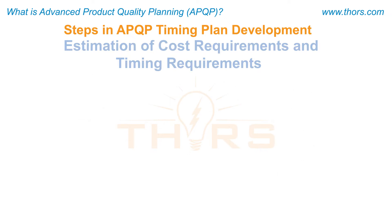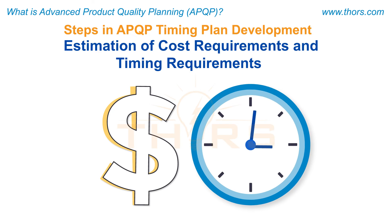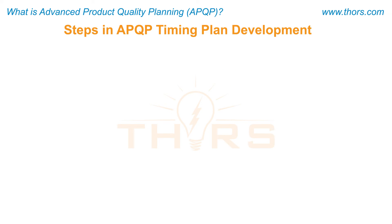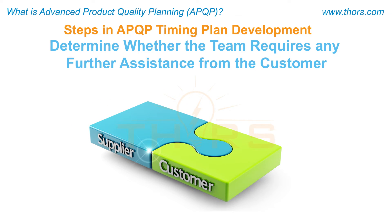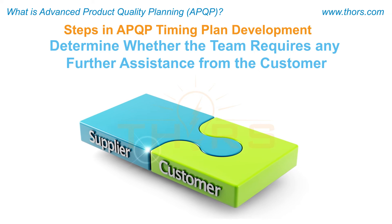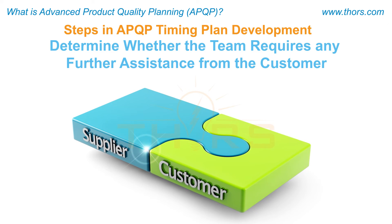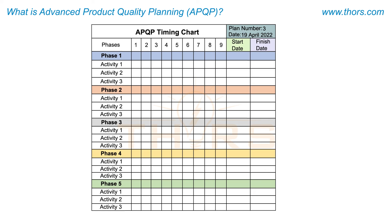In the fifth step, the multidisciplinary team estimates the cost requirements and the timing requirements and identifies the concerns in the product development process. In the sixth step, the multidisciplinary team determines whether the team requires any further assistance from the customer during the product development process, such as the use of the customer's test facility or third-party test facility. Then, the multidisciplinary team finalizes the timing plan.